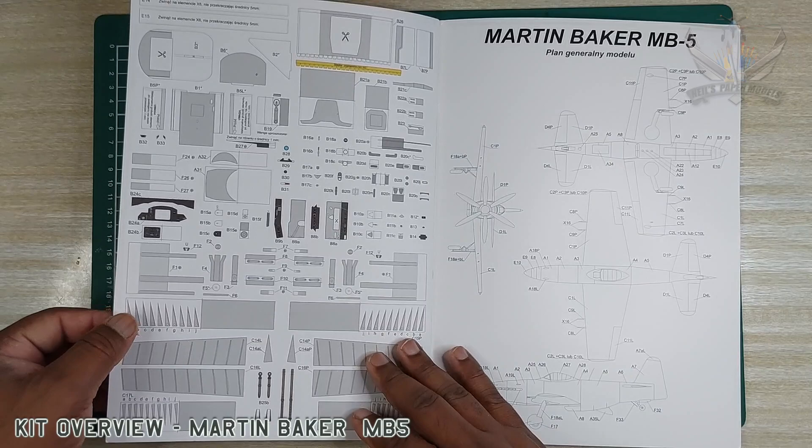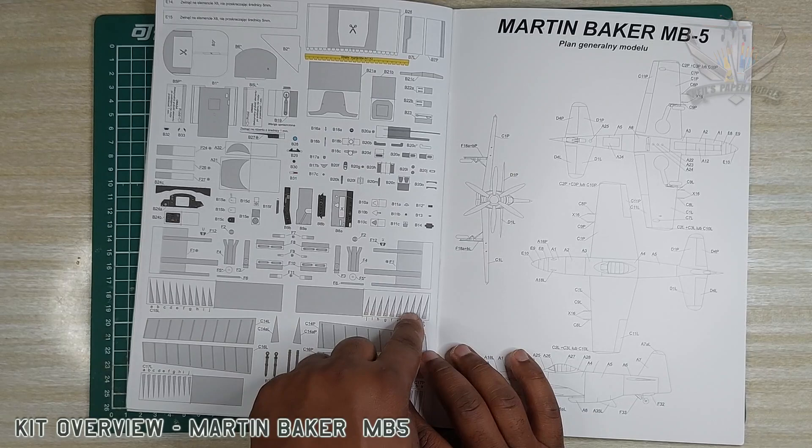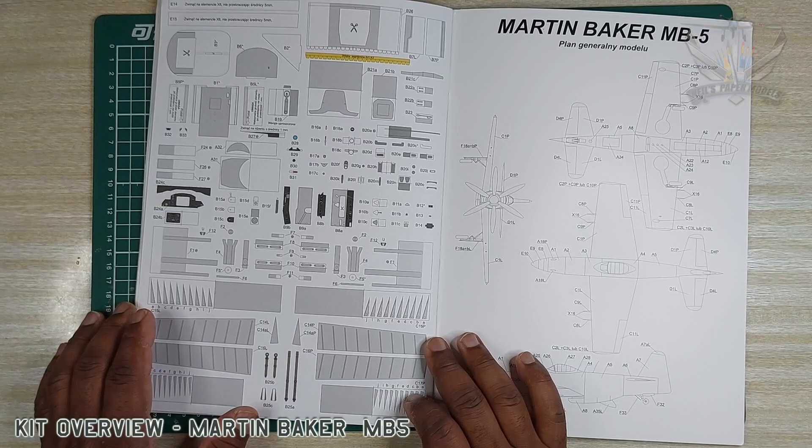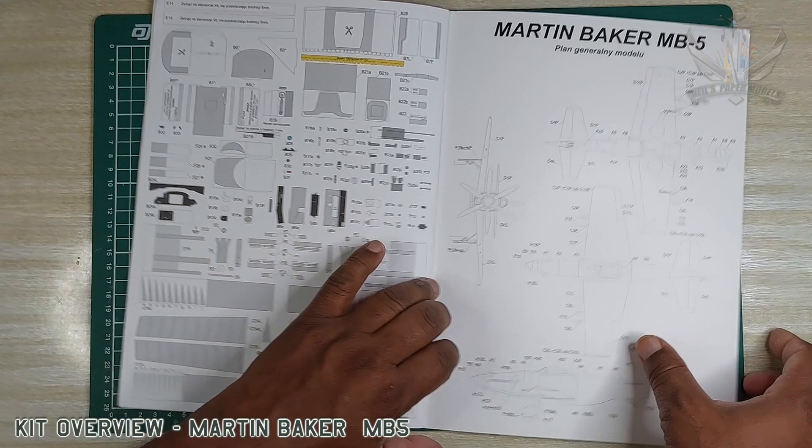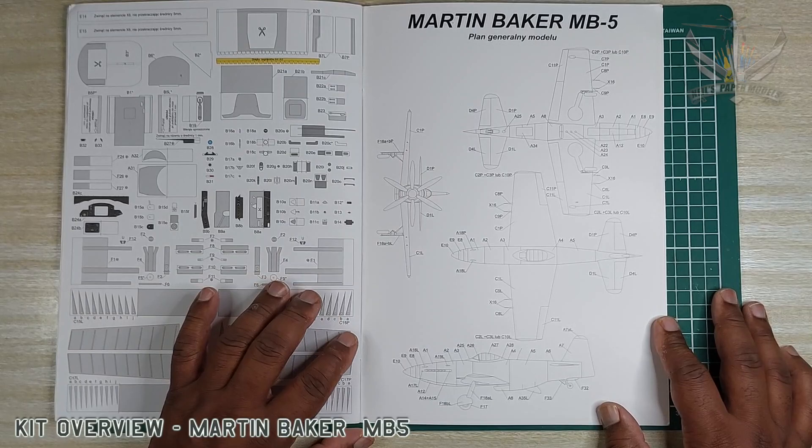There you go, there you have it. Flaps that we just spoke about and the flap ribs, seating, canopy system, and then the overall model view. It's a general plan here.